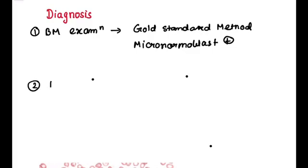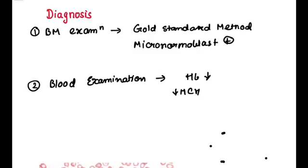Second diagnosis method is blood examination. What we will see in blood examination? We will see decrease in hemoglobin concentration, decrease in mean corpuscular hemoglobin (MCH), decrease in MCV (mean corpuscular volume), and decrease in MCHC (mean corpuscular hemoglobin concentration).